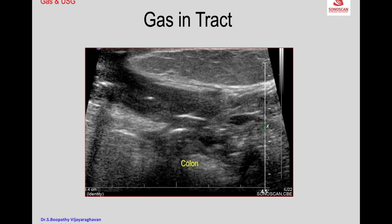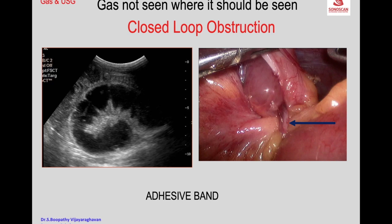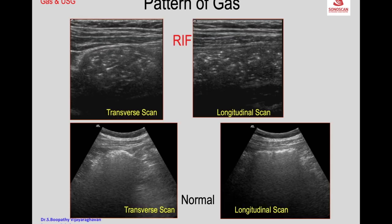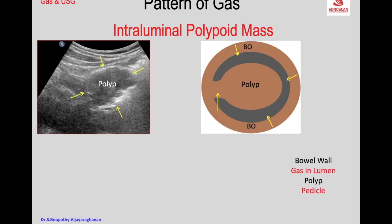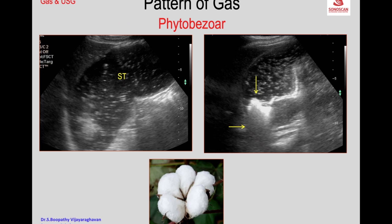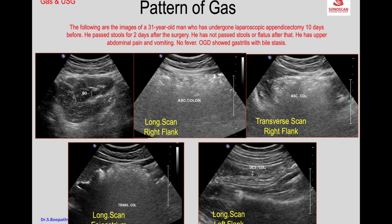The scan showed a colovesical tract with gas within the tract and obstruction to both the proximal and distal loops. As a result, in the right iliac fossa we get a fluffy gas pattern because of gas in the colon. Here you see fluid-distended bowel which is not normal — it could be fluid-distended colon or small bowel. You also see the nature of a polyp within the bowel, and on high frequency this is a phytobezoar or trichobezoar.